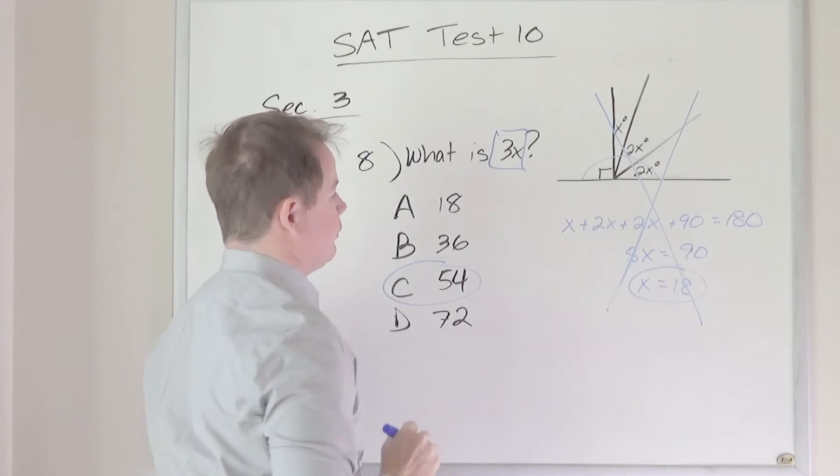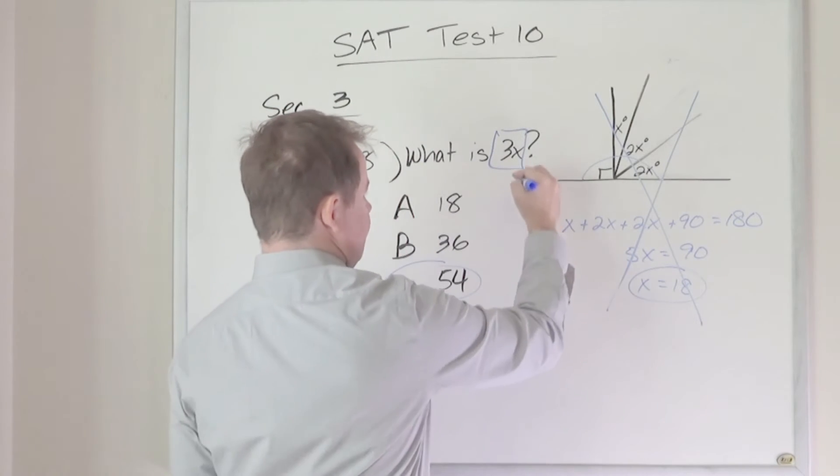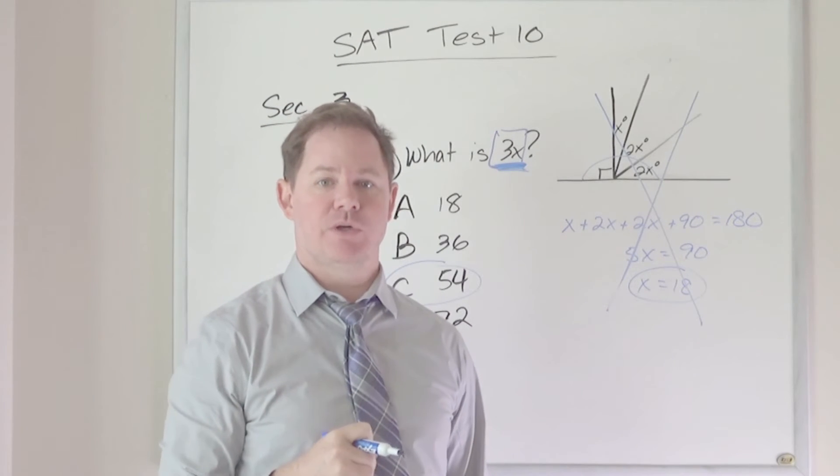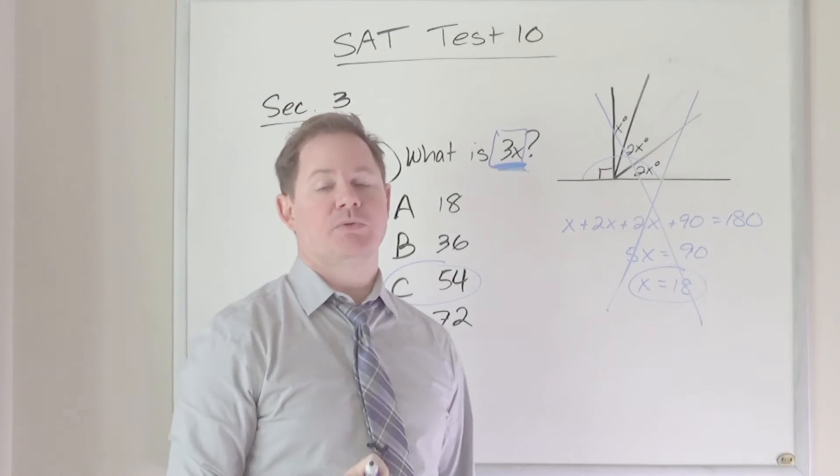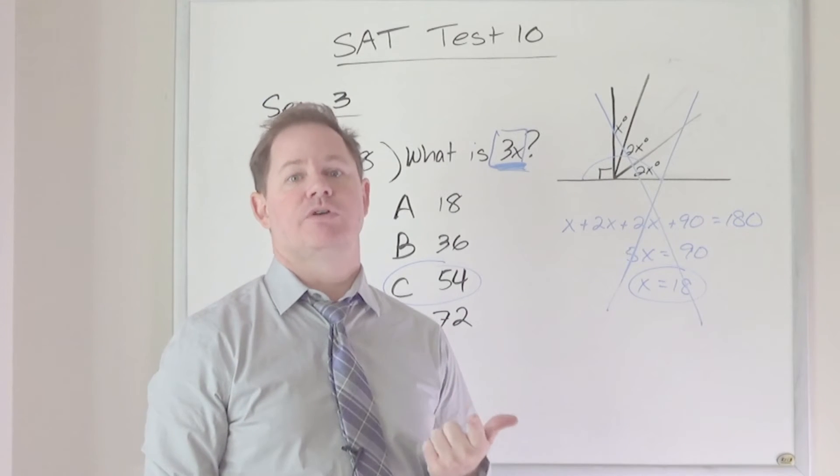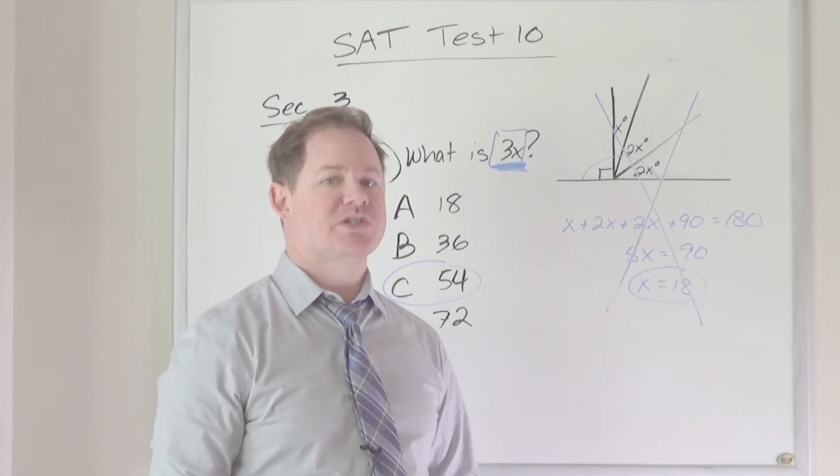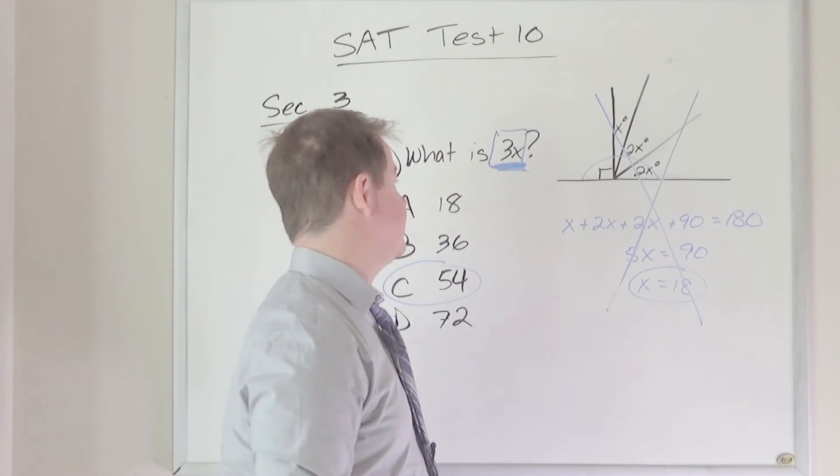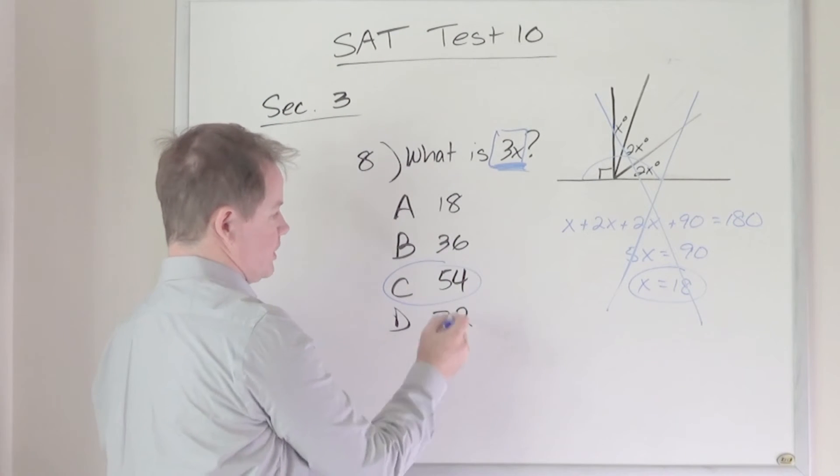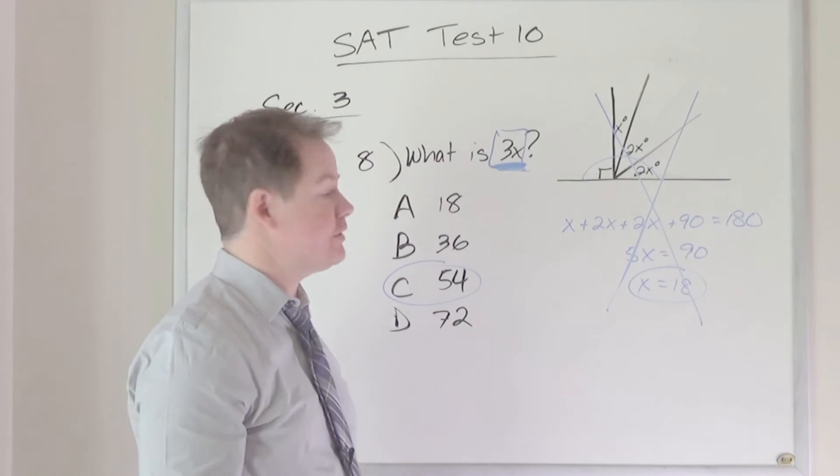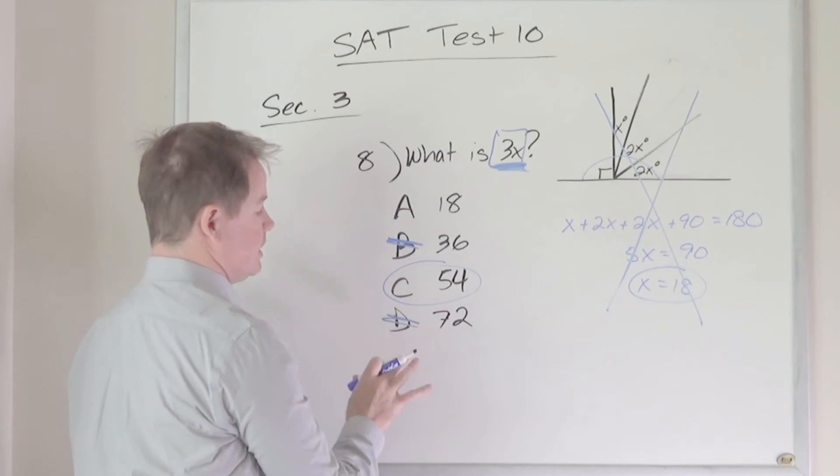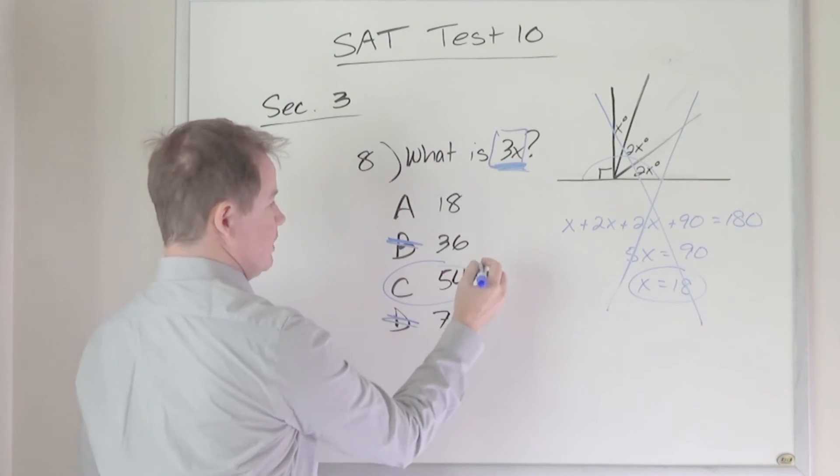They are asking for 3x. And I can tell you right now that anytime you see that you have a coefficient on x in what they're asking for, you can pretty much guarantee that you're going to have an answer choice that gives you the value of x, and then another answer choice that gives you the correct answer. So what you can do if you were stuck on how to solve this mathematically, you can look at the relationship of your answer choices. Do I have any answer choices that are 3 times the value of another answer choice?